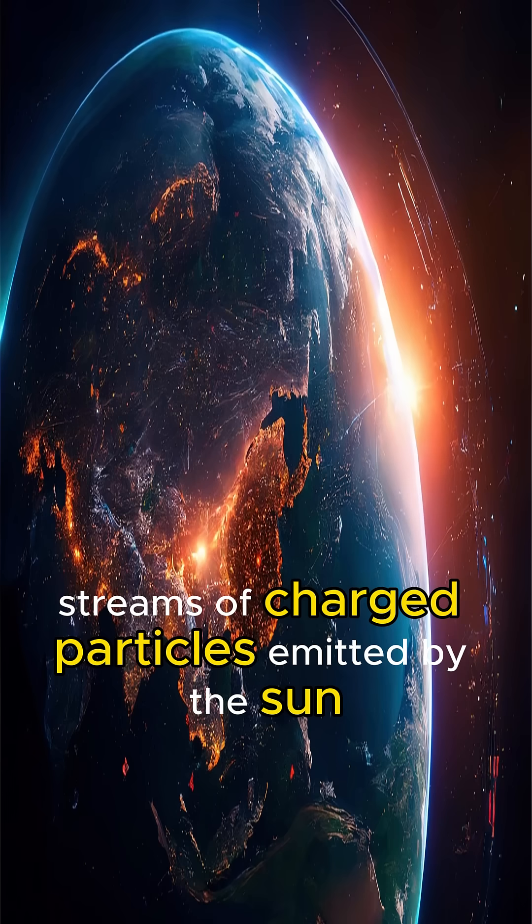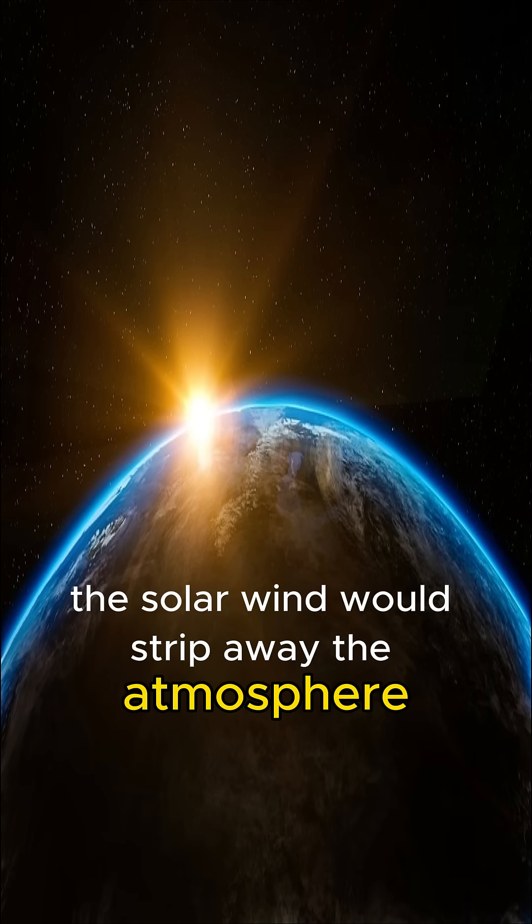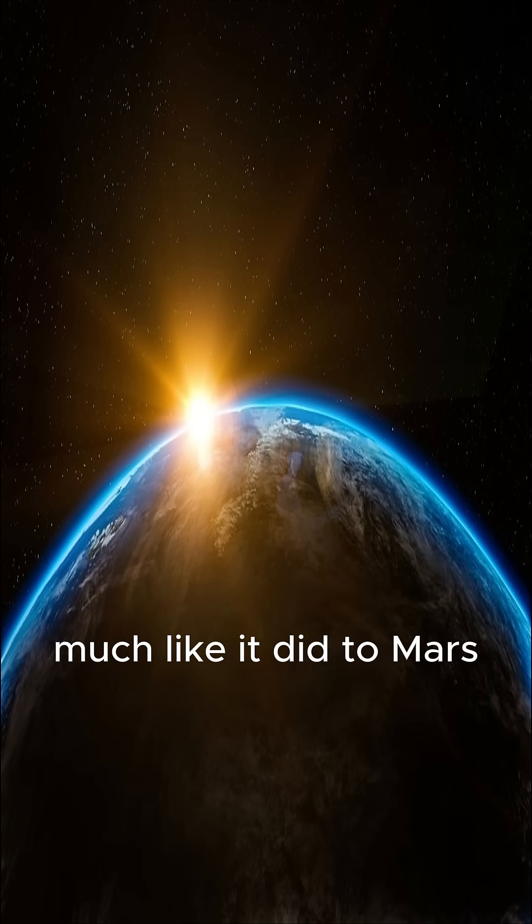The magnetosphere deflects solar wind, streams of charged particles emitted by the sun. Without the magnetosphere, the solar wind would strip away the atmosphere over time, much like it did to Mars.